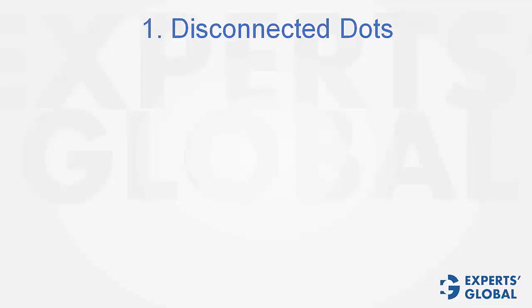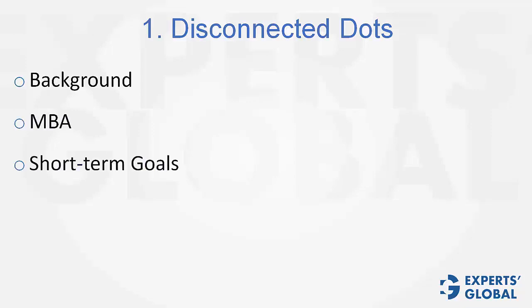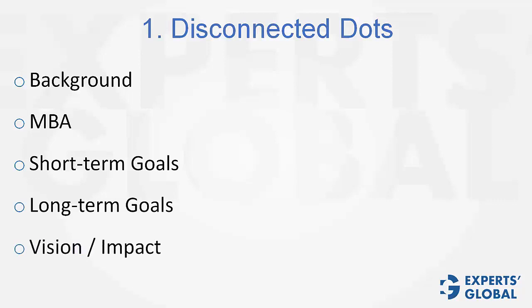Remember the 5 things: background, MBA, short-term goals immediately after MBA, long-term career goals, and a vision and impact through your career and through your life. These have to come together to tell a story. This is the most important part of most applications — something that will help you not only in getting interview calls, but also in facing the interviews.